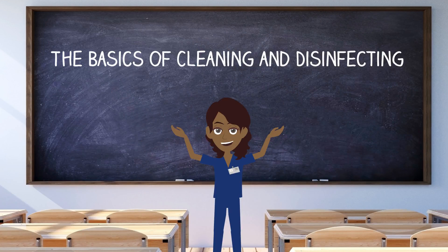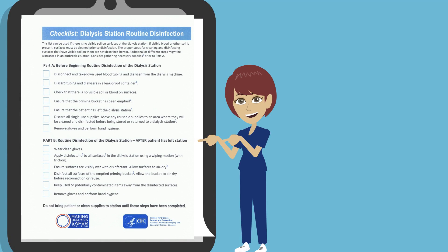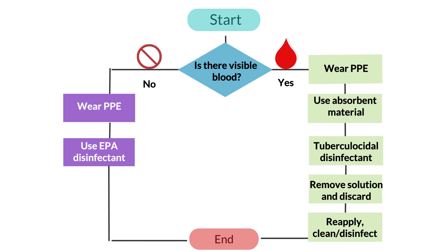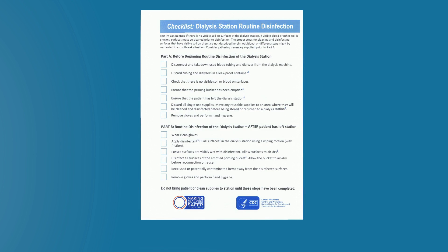Now that we've covered the basics of cleaning and disinfecting environmental surfaces in hemodialysis patient stations, let's look together at the highlights of the CDC publication: Checklist, Dialysis Station Routine Disinfection. This list can be used if station surfaces are not visibly soiled. Using this flow diagram, you can see that if there is visible blood, you would follow those directions to first clean and disinfect the area before moving to the regular cleaning and disinfecting that this checklist covers. When no visible blood is present, we will complete Part A of the CDC checklist before beginning the routine disinfection of the station.